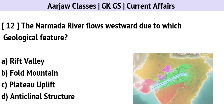The Narmada River flows westward due to which geological feature? The correct option is A — Rift Valley.